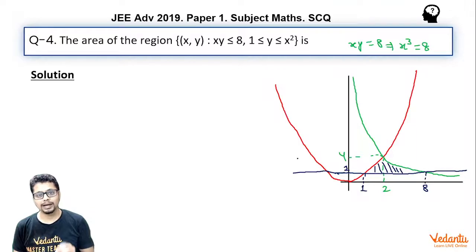Basically this question has ambiguity. This question should have been phrased better, because if you see carefully, even this region satisfies all the conditions involved. Here also x² ≥ y, y ≥ 1, and xy ≤ 8. So the question should have included something like area in the first quadrant or xy > 0, and not just less than or equal to 8.